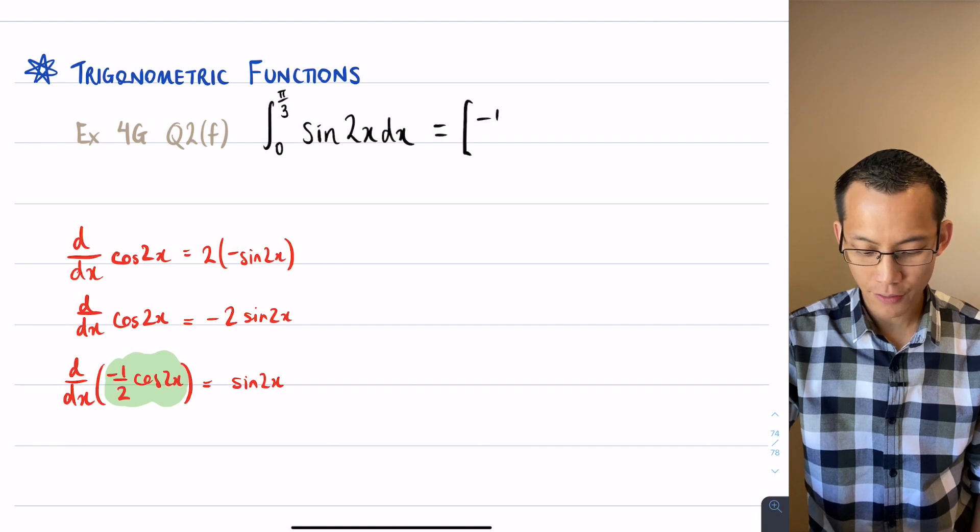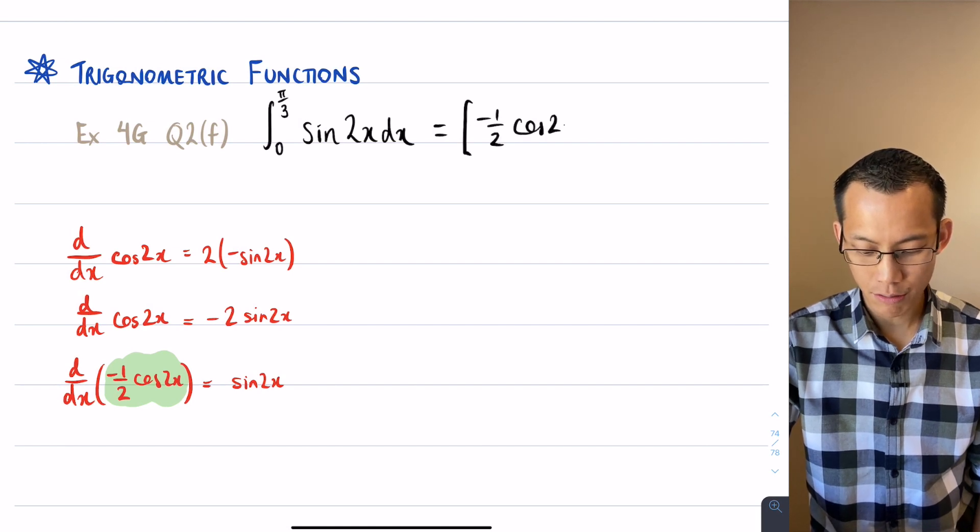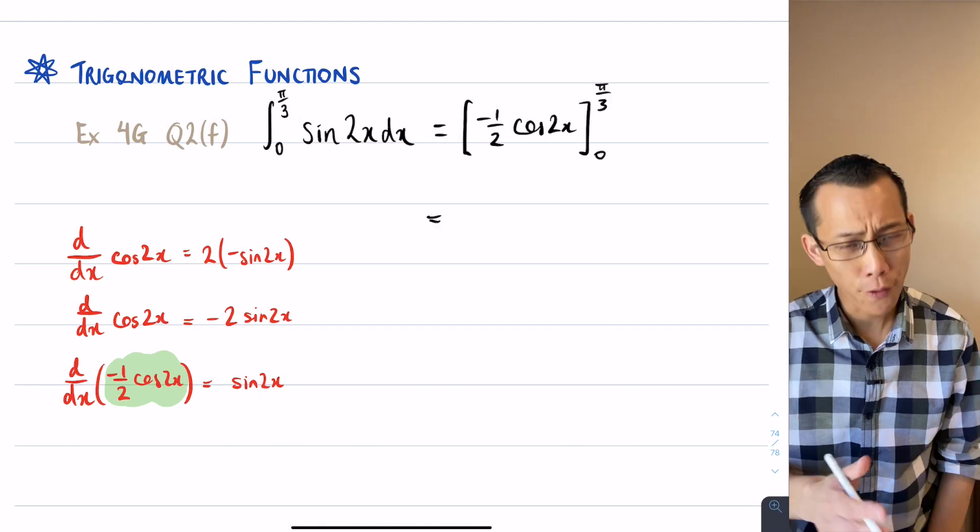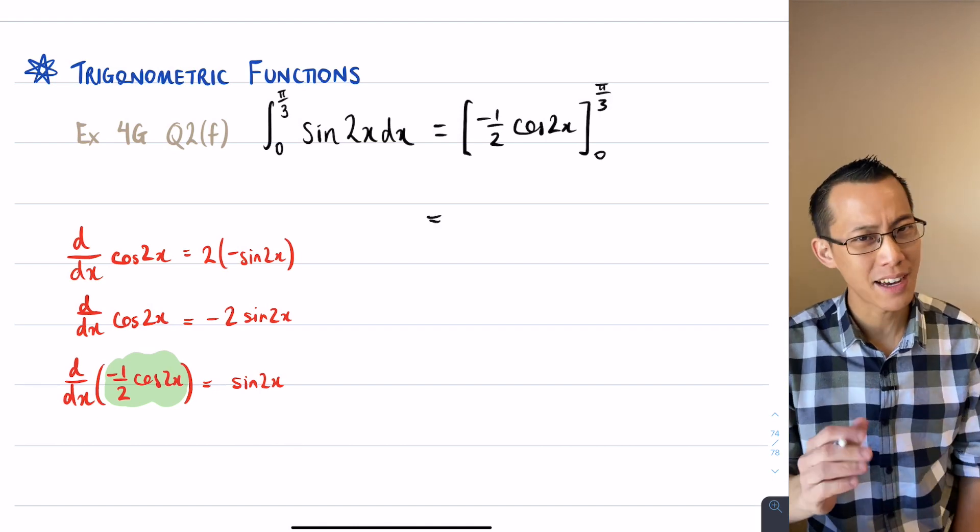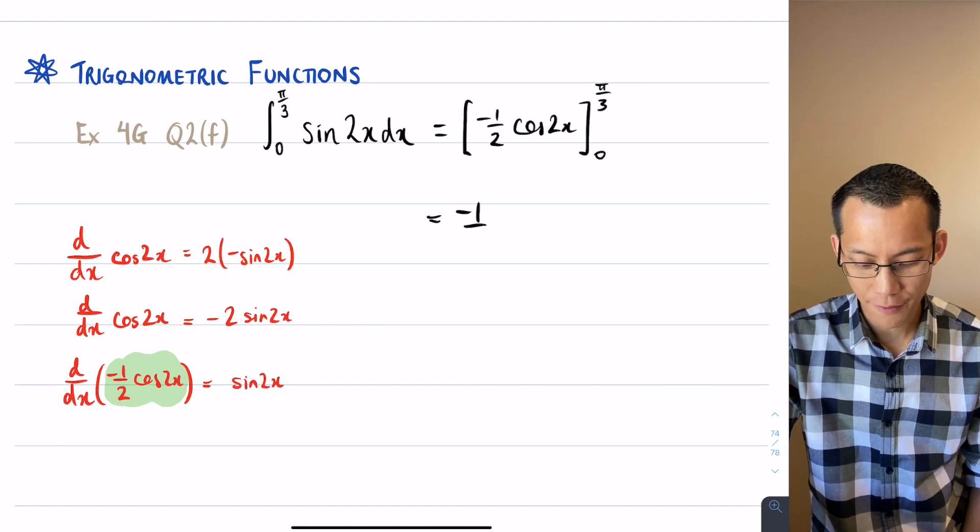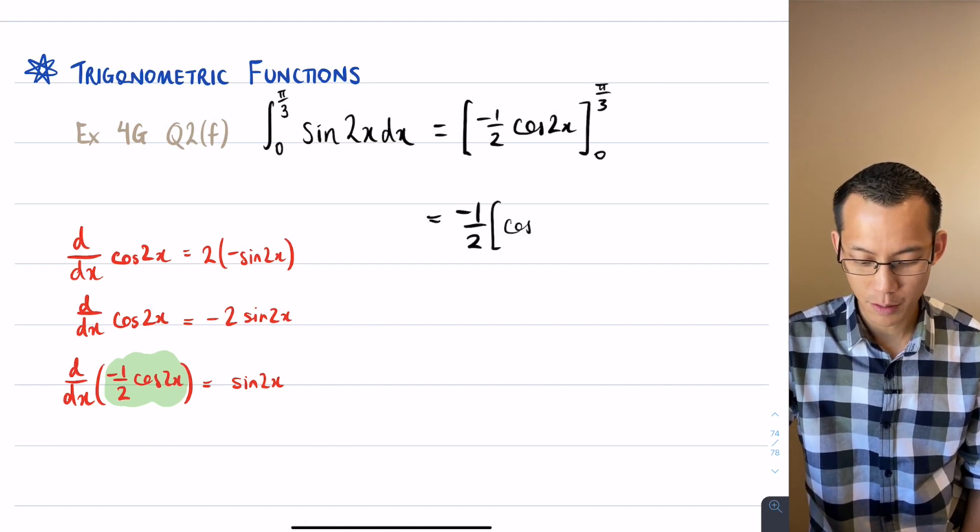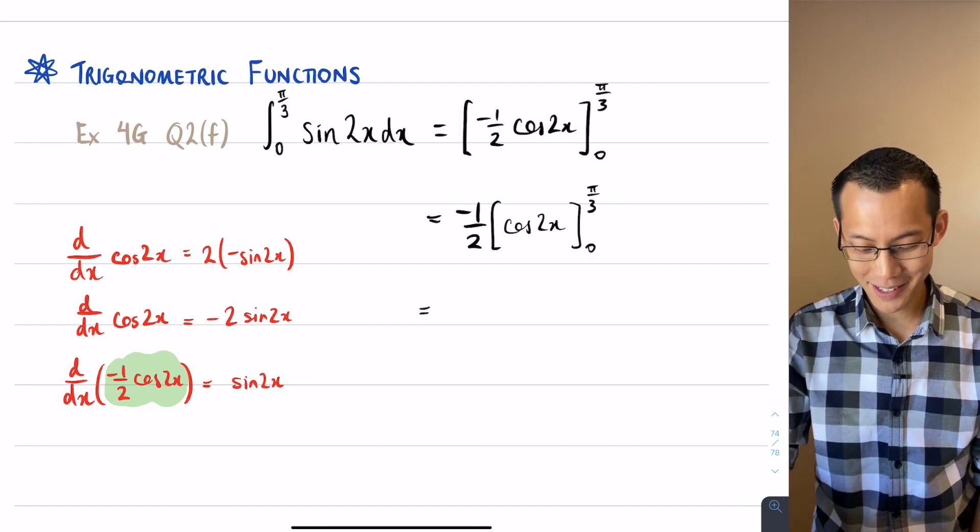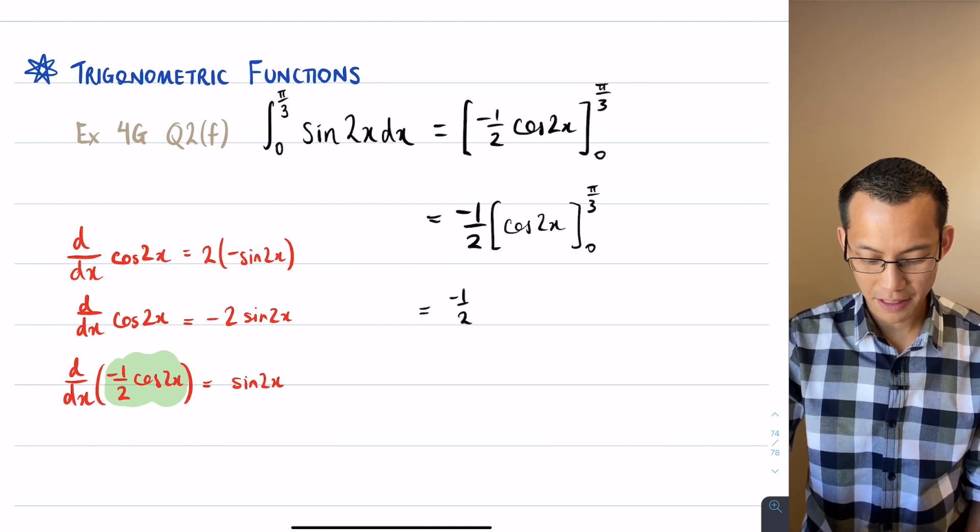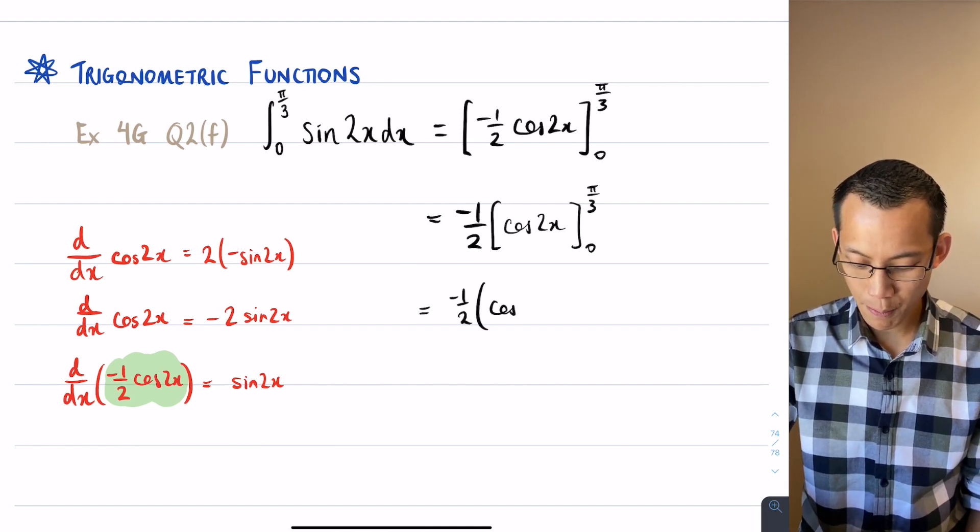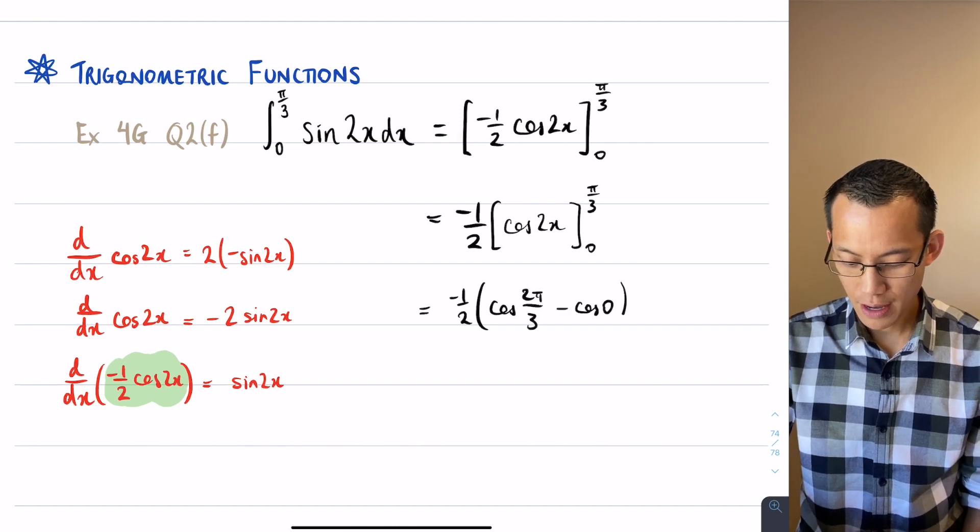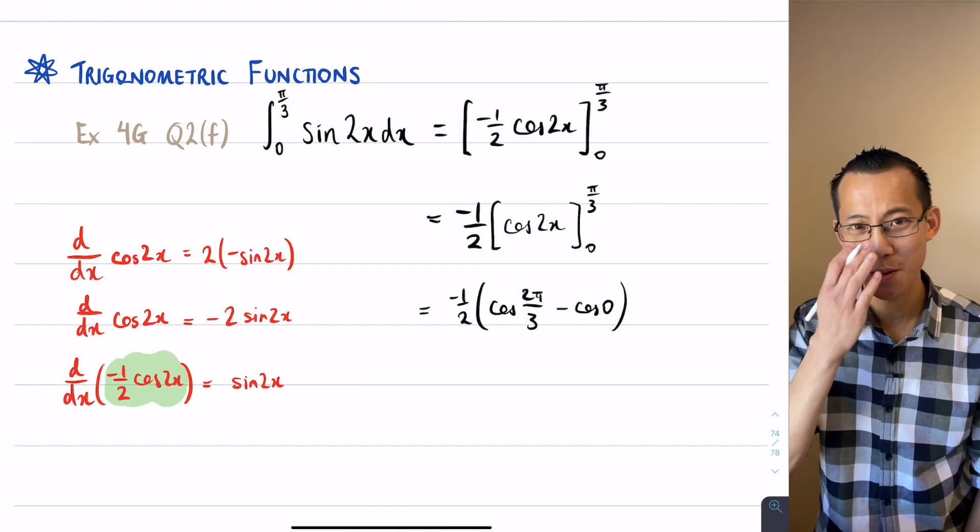The primitive is this negative 1 half cos 2x from 0 to pi on 3. Before I go ahead and do my substitution, I'm going to take out that factor of negative 1 over 2, and that means I'm just going to be evaluating this guy, 0 to pi on 3. Let's see the substitution now, so negative 1 on 2 out the front, cos of 2 pi on 3 firstly, and then cos of 0 secondly.